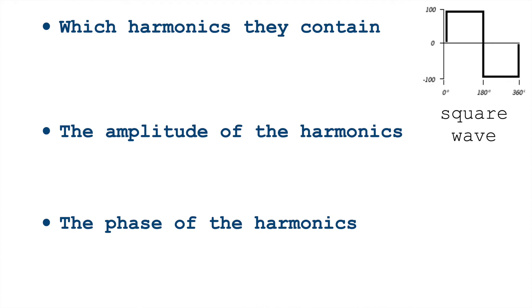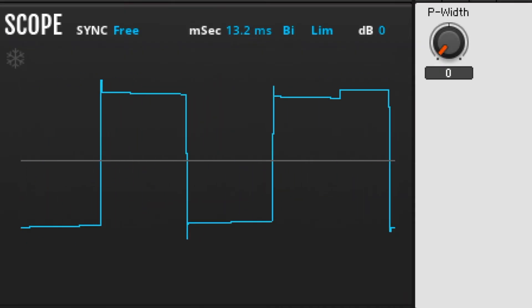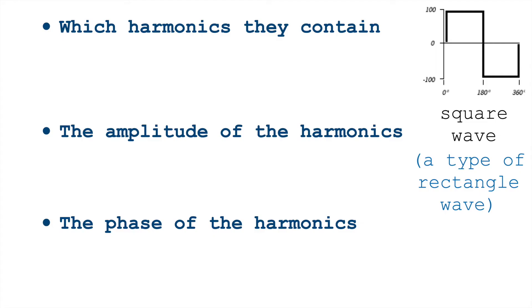Next, let's talk about a square wave, which is a kind of pulse wave, a kind of rectangle wave. Just as you think about shapes, a square is a kind of rectangle. It's a rectangle that has equal sides. A square wave, like a triangle wave, contains only odd harmonics.